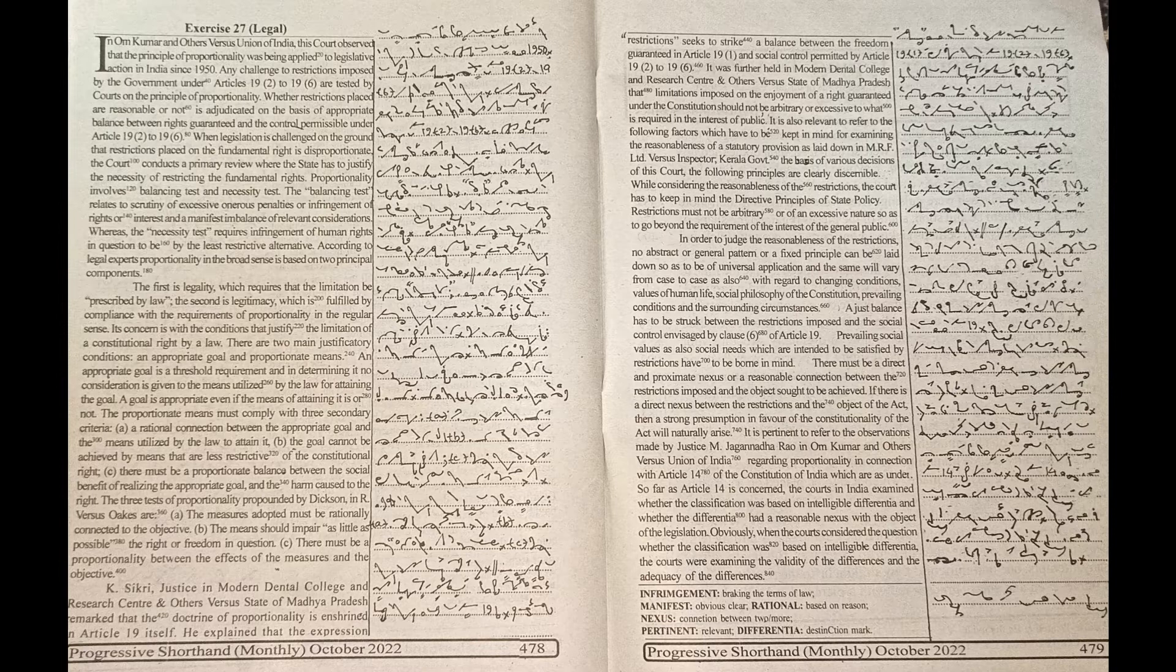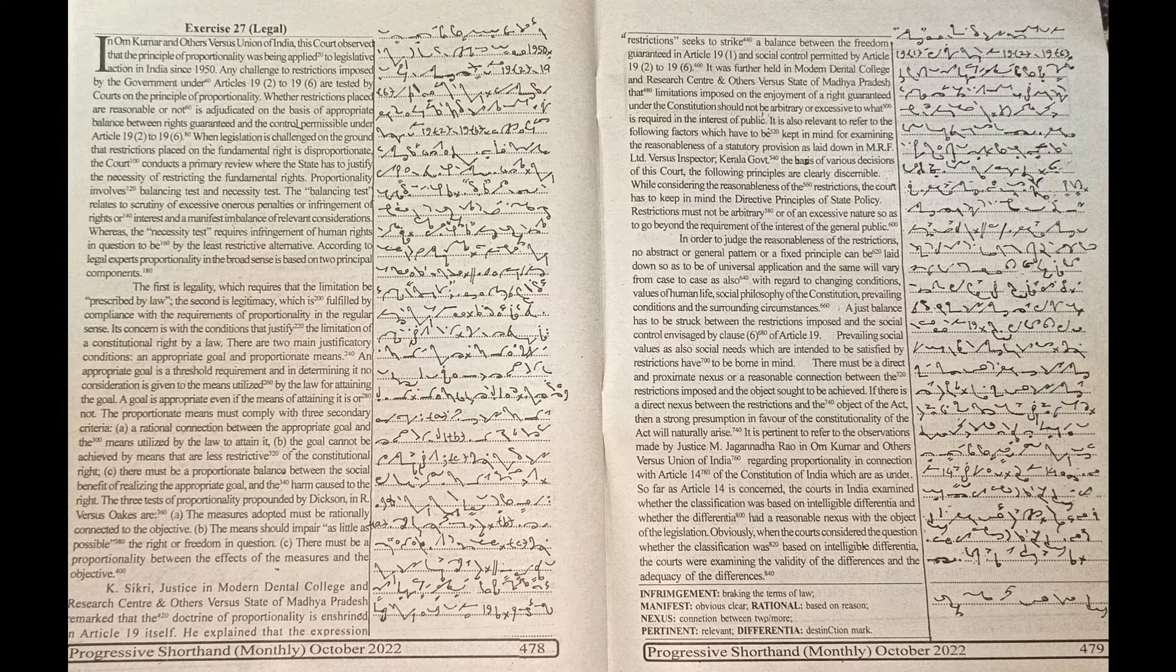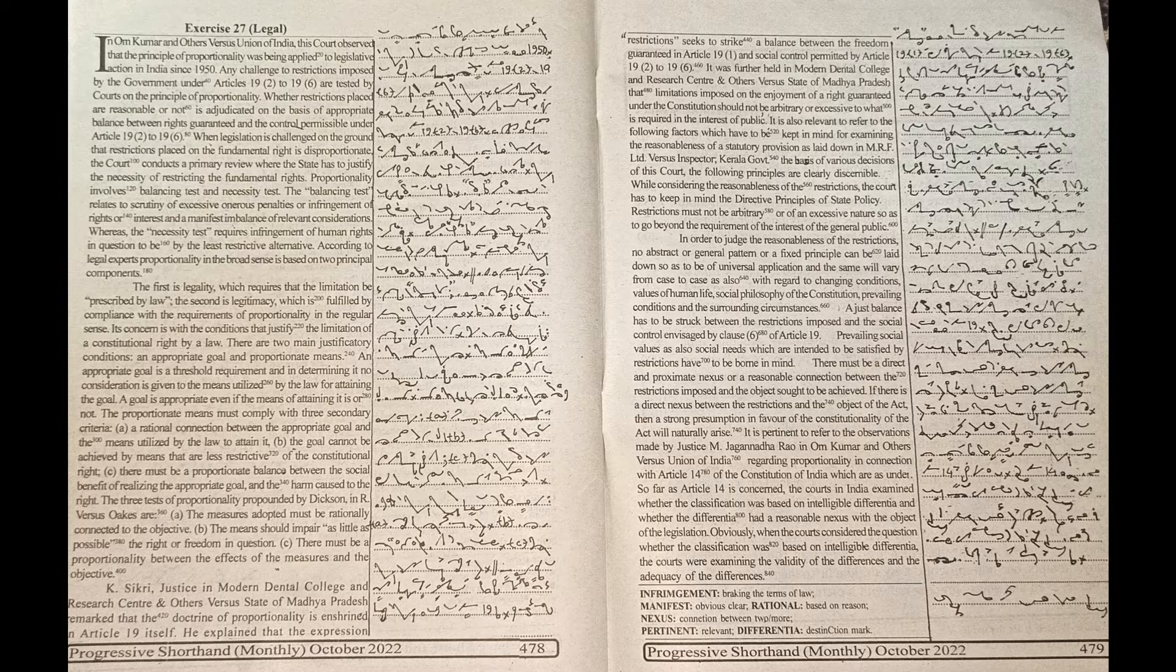When legislation is challenged on the ground that the restrictions placed on the fundamental right are disproportionate, the court conducts a primary review where the state has to justify the necessity of restricting the fundamental rights. Proportionality involves balancing test and necessity test.